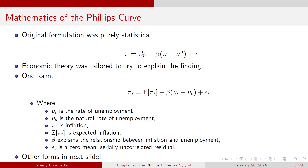Eventually, economic theory was tailored to explain what we see. Originally, it was: π = β₀ − β(u − uₙ) plus some error, where uₙ is the natural rate of unemployment — deviations of unemployment around its natural rate. We tweaked it to: inflation = expected inflation − β(u − uₙ) + ε. That β₀ became expected inflation.